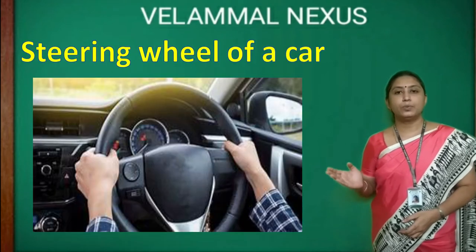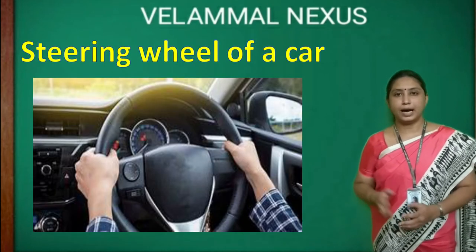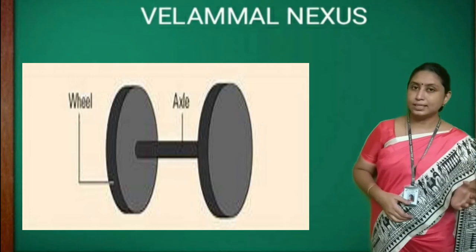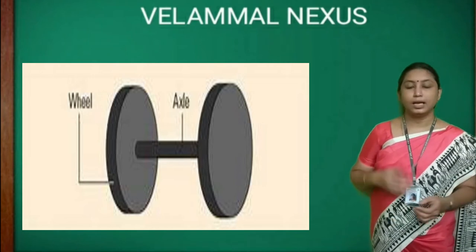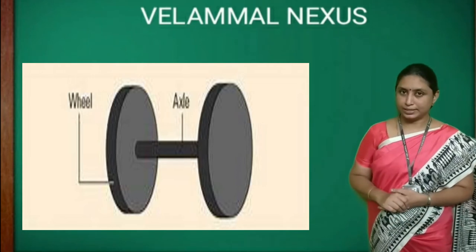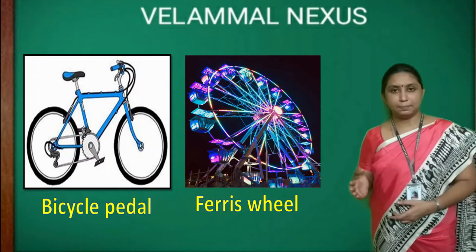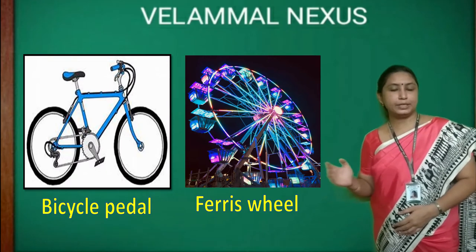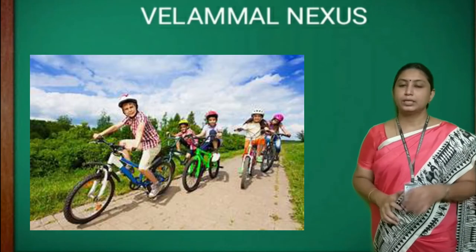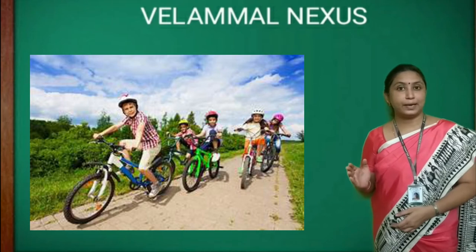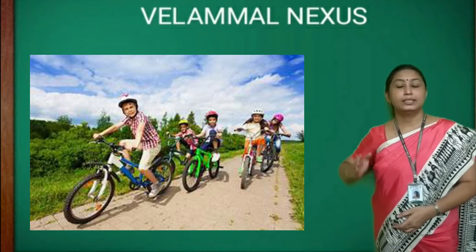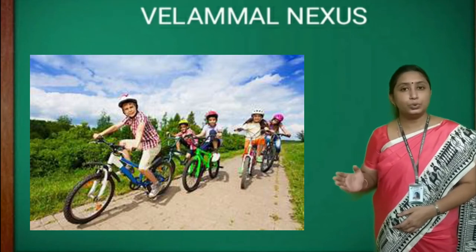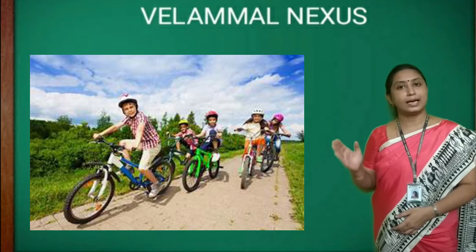Other examples of wheel and axle are the doorknob and the steering wheel of a car. When the axle is rotated, the wheel also rotates — examples include a bicycle pedal and a Ferris wheel. Children, when you ride your bicycle, just remember that you are riding on two wheels and axles!